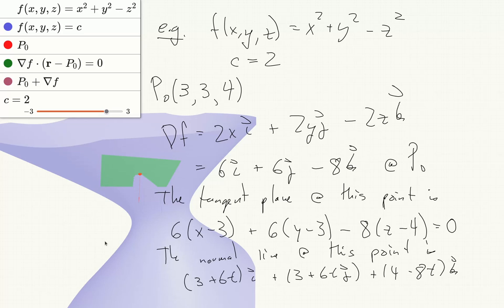So the tangent plane you can think of as all possible velocities you could have while traveling through the surface.